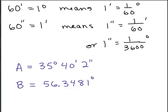Now that we have calculators, often you're going to see angles written in this format with a decimal for the part of the degree. So in other words, the whole number part of the degrees for A is 35. The whole number for B is 56. But the part of the degree is this 40 minutes and 2 seconds for A. And this is 0.3481 degree, that's part of a degree. So it's between 56 and 57 degrees. A is between 35 and 36 degrees.